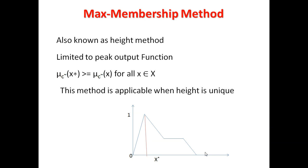This is basically limited for the Peak Output Function. If you look at this diagram, the maximum height is at this point. But the Max Membership Method will be used in the same case when the Peak Height Method comes to the Peak Output Function. In that case, we will calculate that this particular point, the X value is at this point, that will be called basically the crisp value as output.